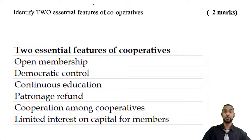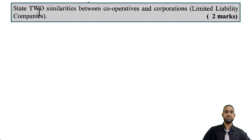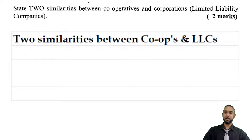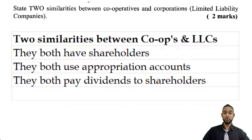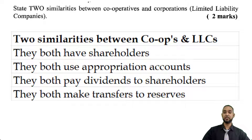A part 2 is asking us to state two similarities between cooperatives and corporations — limited liability companies — for two marks. I'm going to give you more than two. They both have shareholders, they both use appropriation accounts to distribute profits or surpluses, they also pay dividends to the shareholders, and they both make transfers to reserves.